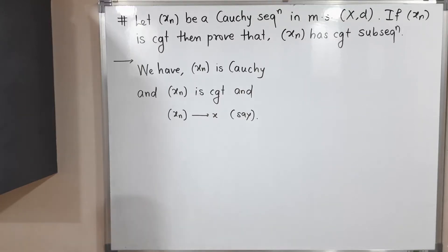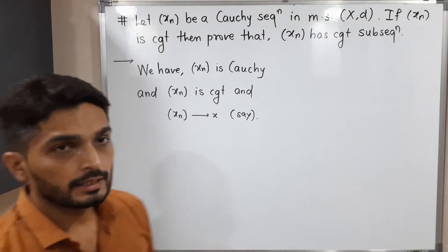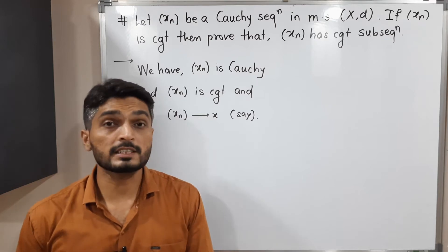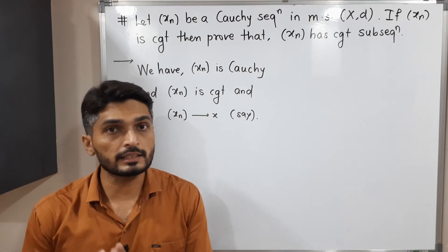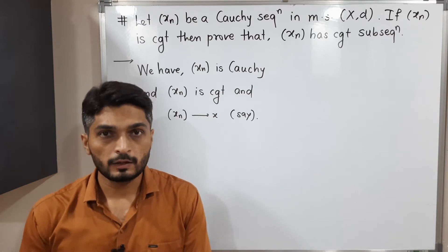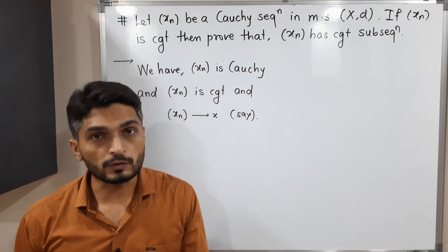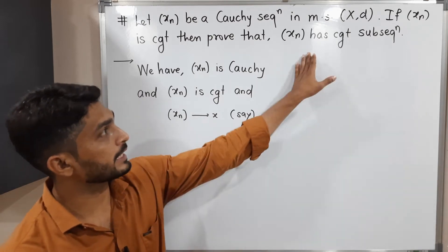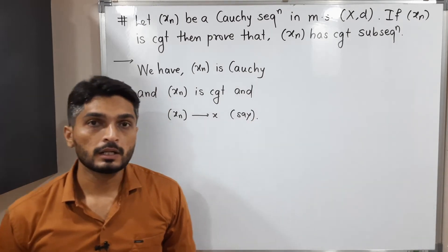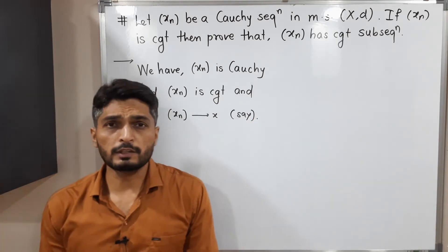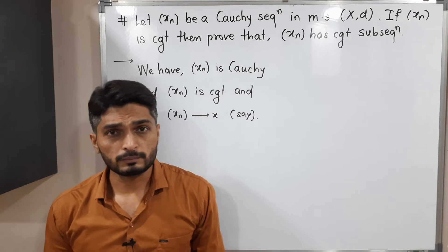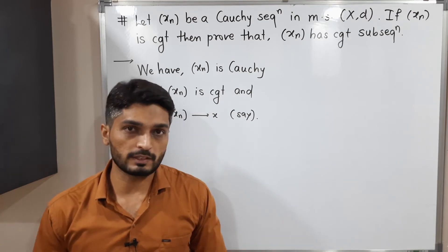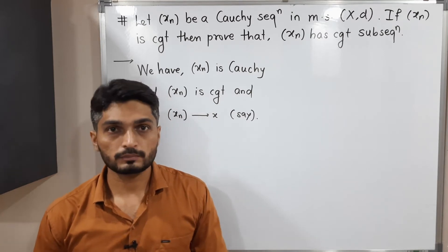Hi everyone, let us discuss this result. In this result, we have a metric space XD. We have a sequence Xn in XD, which is Cauchy and also convergent. We have to prove that it has a convergent subsequence — specifically, we are going to prove that if Xn is Cauchy and convergent, then every subsequence of Xn is convergent.